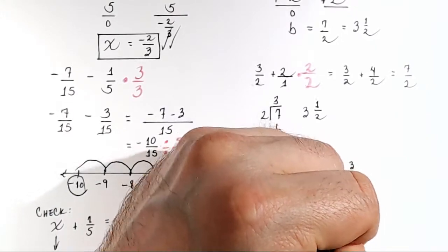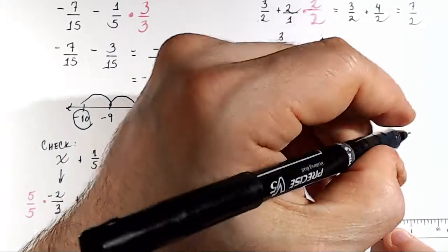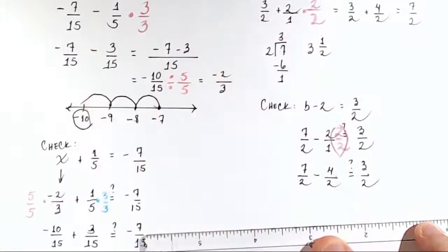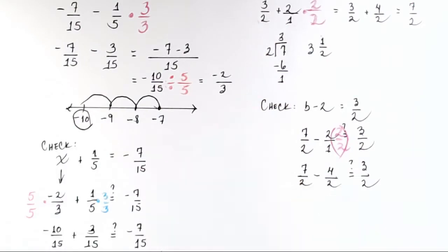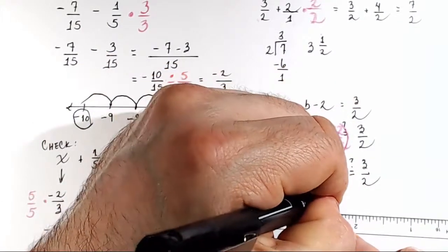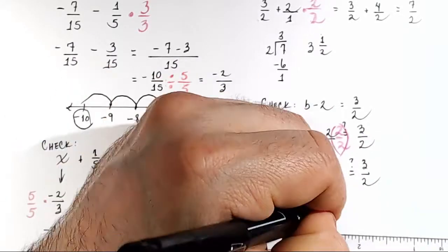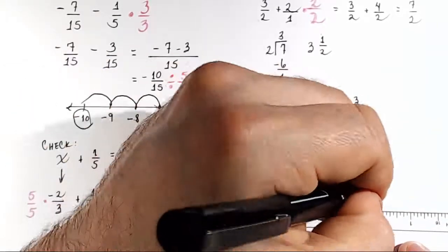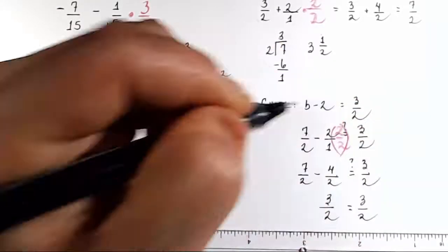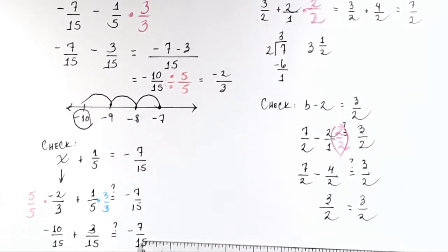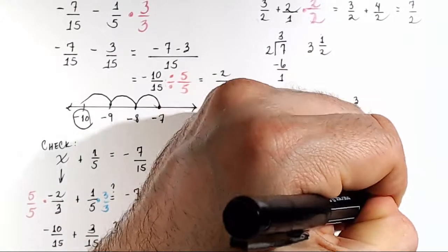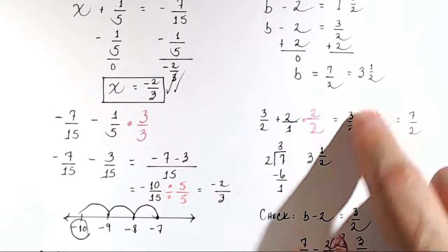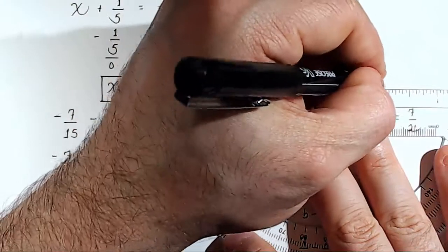Again, we want to say, does this equal 3 over 2? Well, 7 minus 4 is 3. So now we have 3 over 2 equals 3 over 2. This trueism right here, this identity here, is a double check confirmation that the value we found, 3 and 1 half, is correct. So you can put this whole thing in a box. And we can just do check, check to indicate that we are right.